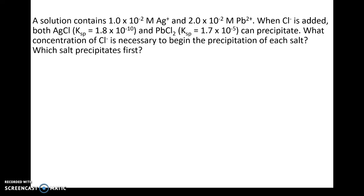A solution contains 1×10⁻² moles per litre silver ions and 2×10⁻² moles per litre lead ions. When chloride is added to the solution, both silver chloride with a solubility product constant of 1.8×10⁻¹⁰ and lead chloride with a solubility product constant of 1.7×10⁻⁵ can precipitate. What concentration of chloride is necessary to begin the precipitation of each salt, and which salt precipitates first?